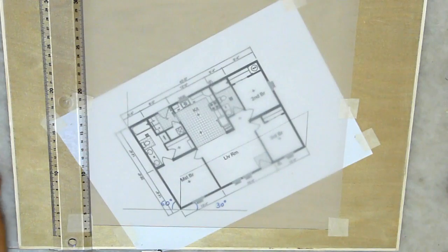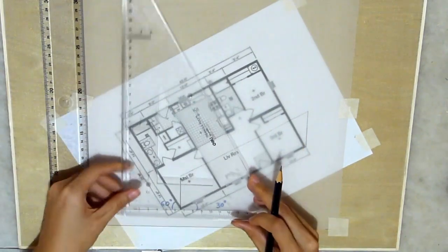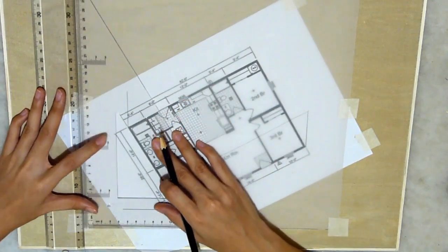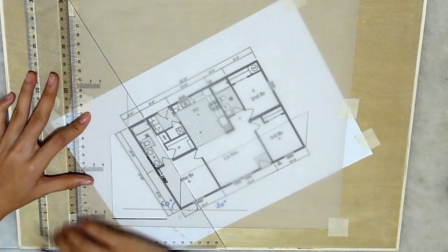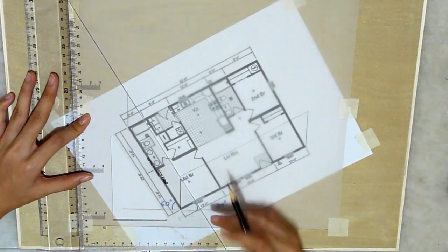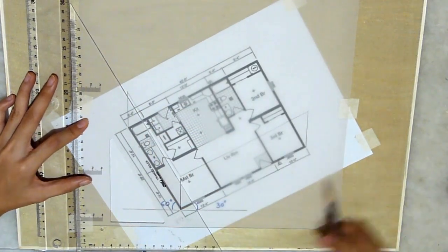Now this side, bear in mind, is 60 degree. So I would have to tilt my ruler like this and slide it across. All the time making sure that T-square is leaning against the board. And I'll draw the line to make the other wall.